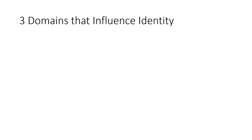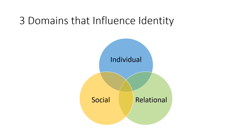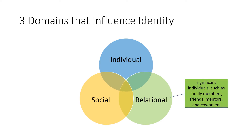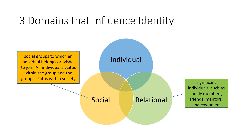There are three domains that influence our identity: the individual, the relational, and the social. Relational includes friends, family, mentors, and co-workers closely connected to you who play a huge role in your thinking. Social groups you belong to and your status within those groups also influence your identity. These are the external influences Krishnamurti talked about, and most importantly, they help shape your internal schemata.